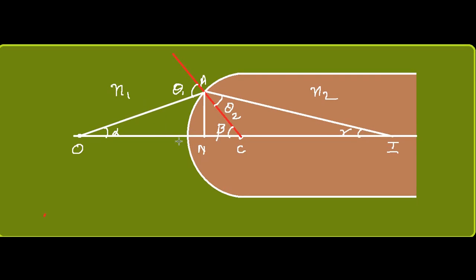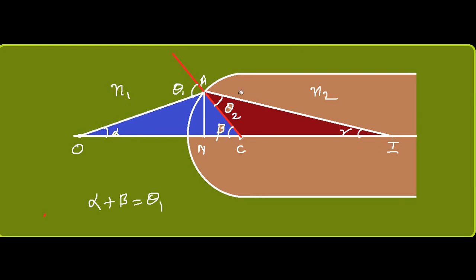In this ray diagram we have two triangles. From triangle AOC we can say that alpha plus beta equals theta one. From triangle ACI we can say that beta equals theta two plus gamma, which implies theta two equals beta minus gamma.